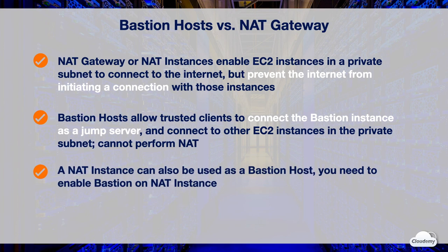A NAT instance can also be used as a bastion host. You need to update your NAT instance's security group rules to allow inbound and outbound ICMP traffic, allow outbound SSH traffic, and configure SSH agent forwarding to access instances in your private subnet. It's recommended to use NAT gateway for NAT and use separate bastion instances as jump servers. You can use both NAT gateway and bastion together in the same VPC — use bastion to provide secure inbound connections and NAT gateway to provide secure outbound connections.